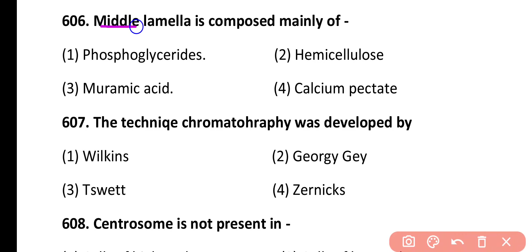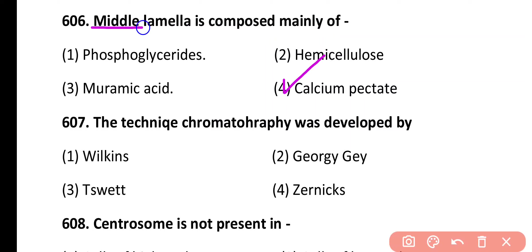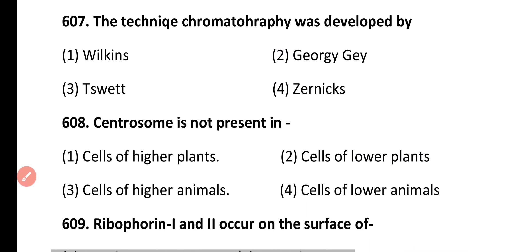Question 606. Middle lamella is composed mainly of: phosphoglyceride, hemicellulose, muramic acid, calcium pectate. Correct answer is option 4. Calcium pectate is present in the middle lamella.